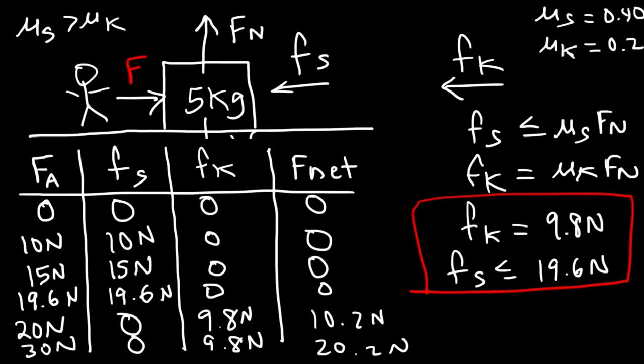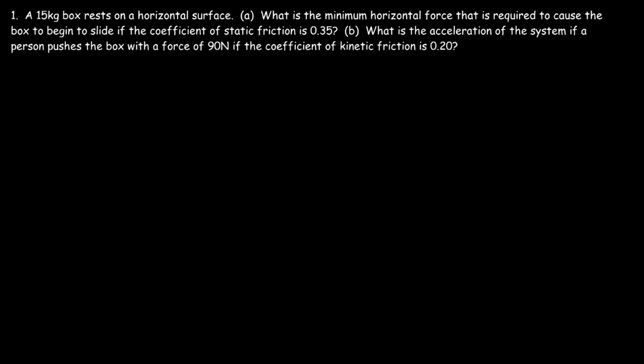Hopefully this example helped you understand the difference between static friction and kinetic friction and how to calculate it based on the applied force. Let's work on this problem: a 15 kg box rests on a horizontal surface. What is the minimum horizontal force required to cause the box to begin to slide if the coefficient of static friction is 0.35?